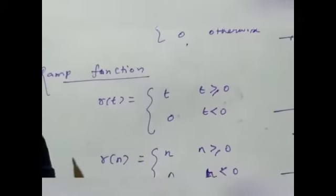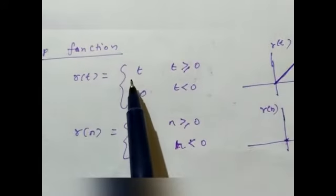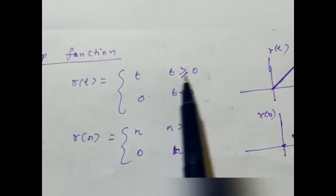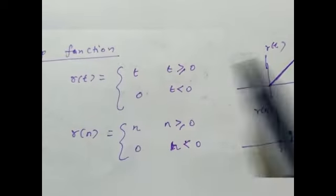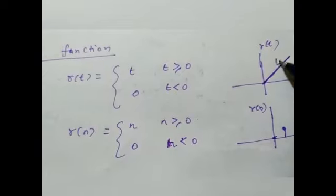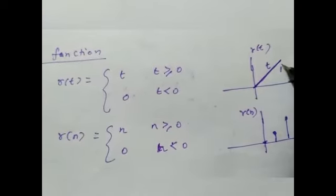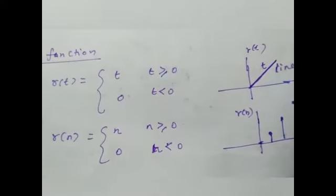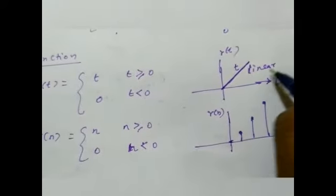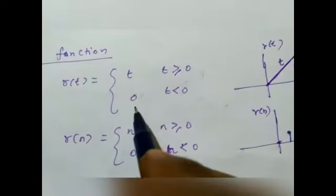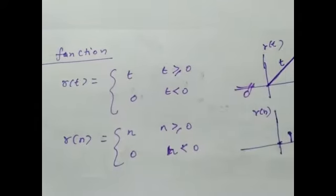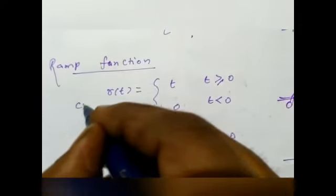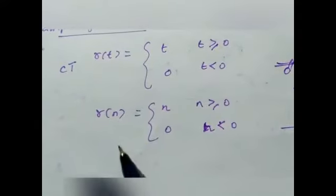The third signal is the ramp function, denoted by r(t). For positive time, t greater than or equal to 0, the function value is t — it goes like a linear function. For negative time, t less than 0, the function value is 0. This is for continuous time signal.